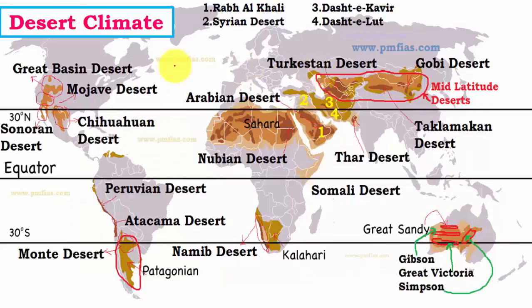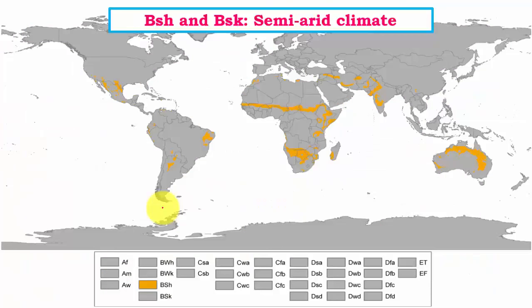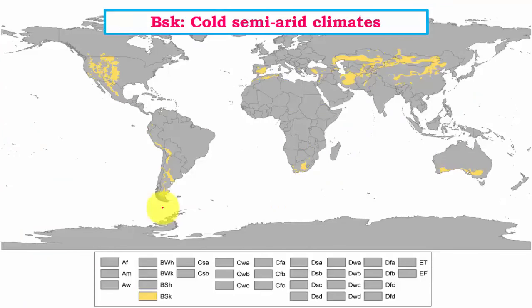Dry climatic conditions and deserts are mainly formed due to subtropical high pressure belts along with cold currents bordering these regions, creating deserts near the tropics. Semi-arid climates are transition zones between various dry and wet type climatic regions. Cold semi-arid type climates are found mainly in highland regions like tall mountains and various temperate regions like steppic grasslands.